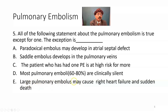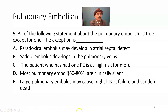A large pulmonary embolus may cause right heart failure and sudden death — yes. It may lead to right heart failure, acute cor pulmonale, and sudden death, specifically if a very large embolus blocks the pulmonary trunk or a major branch. It may block the entire pulmonary circulation very quickly, leading to right-sided heart failure and sudden death.